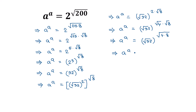So a to the power a is equal to square root of 32, all to the power of 2 times square root of 8. Since 2 times square root of 8 equals square root of 4 times 8, which is square root of 32, we get square root of 32 to the power of square root of 32. Comparing both sides, a to the power a equals square root of 32 to the power of square root of 32, so the value of a is equal to square root of 32.